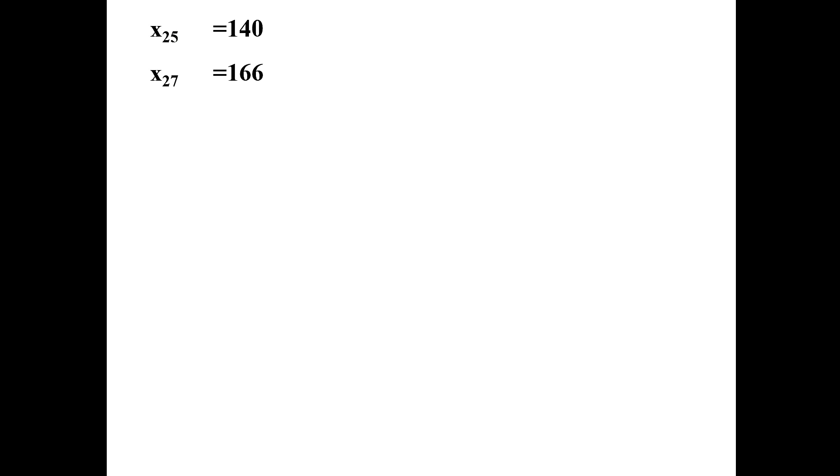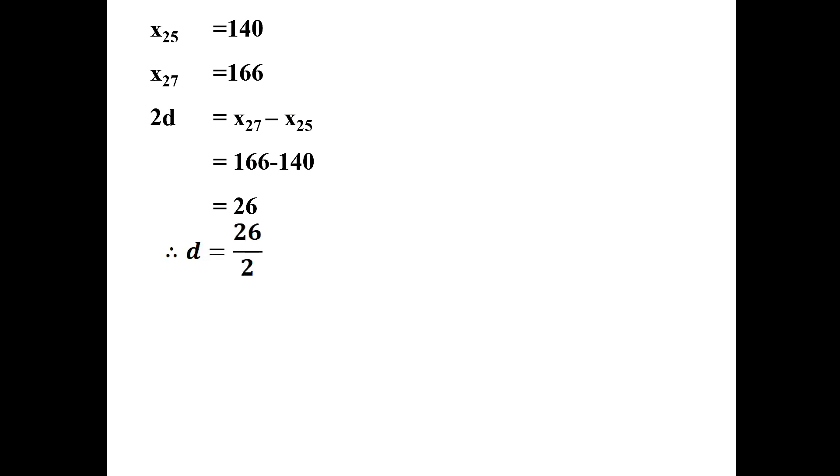Given that the 25th term is 140 and the 27th term is 166. Adding the common difference to the 25th term gives the 26th term, and adding it again gives the 27th term. So the difference between the 27th and 25th terms equals 2 times the common difference: 2d = 166 minus 140 = 26, therefore d = 13.